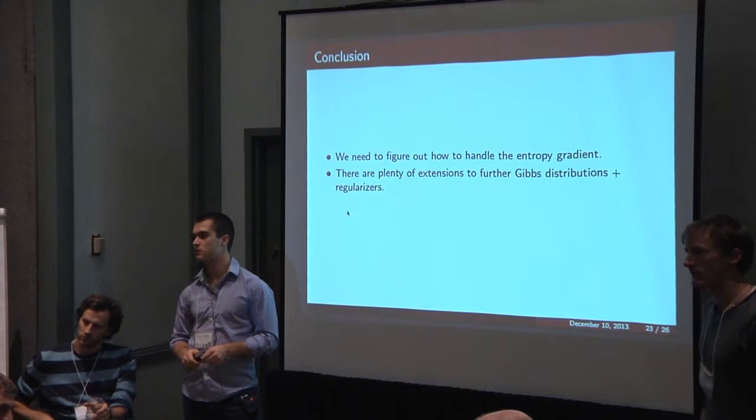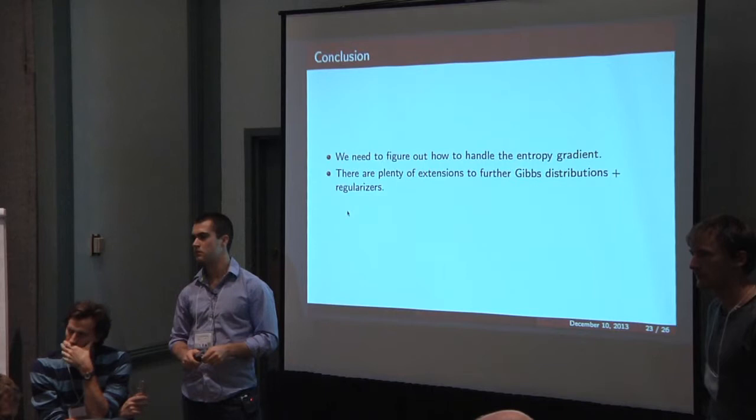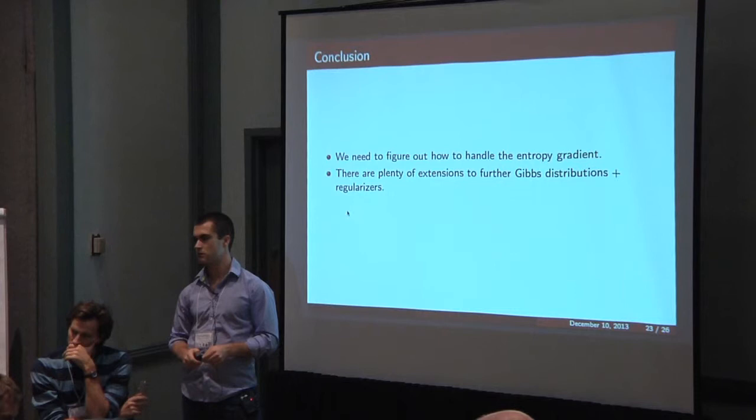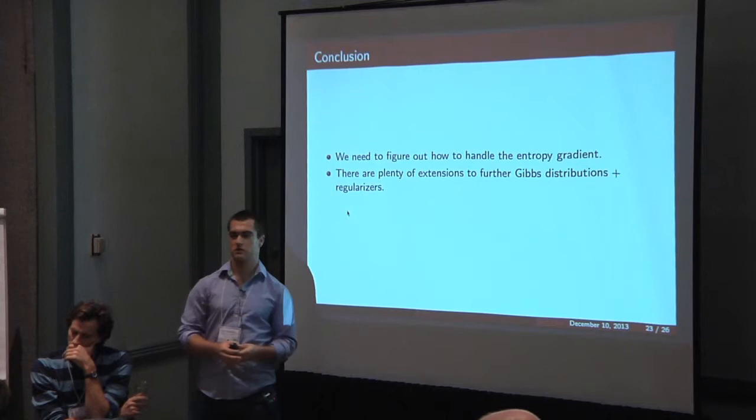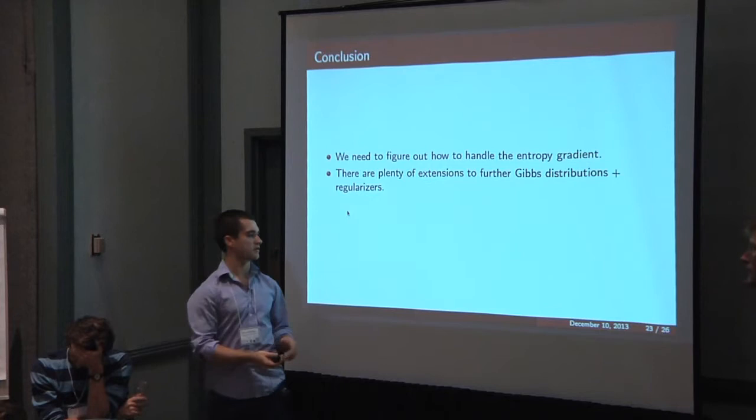So you've talked about finding maximum matching, doing marginal inference. It's known that in general counting the number of matchings in a graph is NP-hard. So I'm wondering, does marginal inference run into this barrier or is there some way around it? Oh yeah. Is that why you have the big X? Oh, yeah. So first of all, I should have been more clear about that.